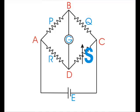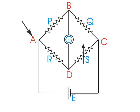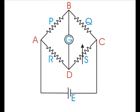Arms CD and DA consist of known and fixed resistances P and Q, variable resistance S, and unknown resistance R respectively. The arms AB and BC are known as ratio arms.